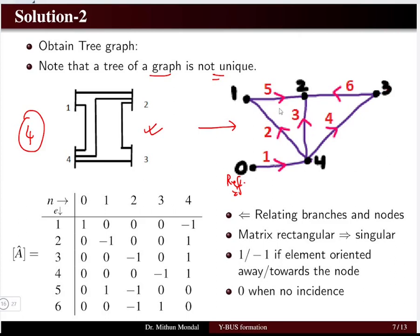For example, branch 2 goes one way, branch 5 another, and branch 3 another — giving no closed path. If branch 3 were oriented differently, a closed path would result. The total number of nodes is 4 plus the reference node 0, giving 5 nodes total. The branches are numbered 1 through 6, so there are 6 branches and 4 non-reference nodes.